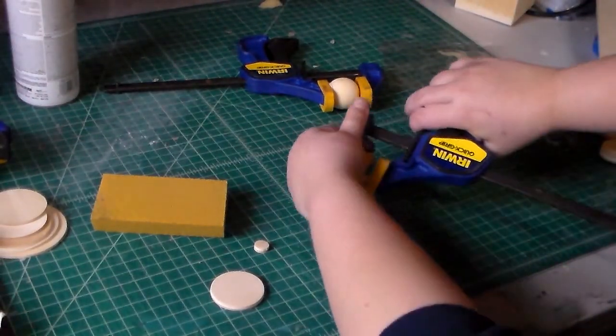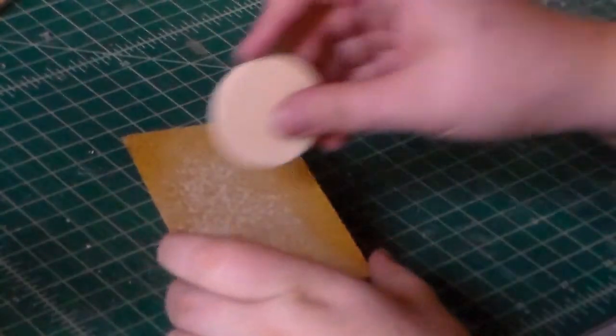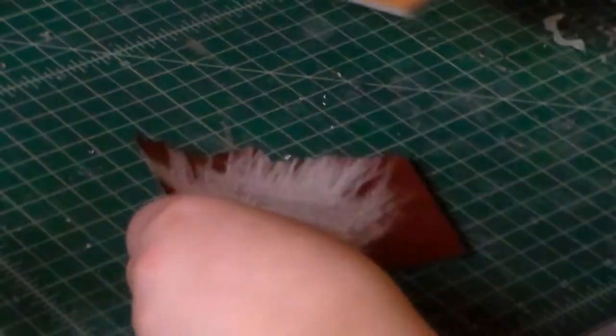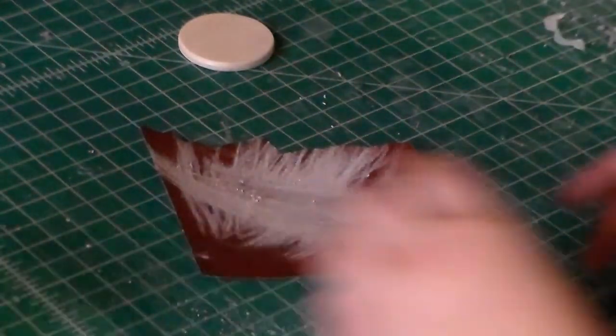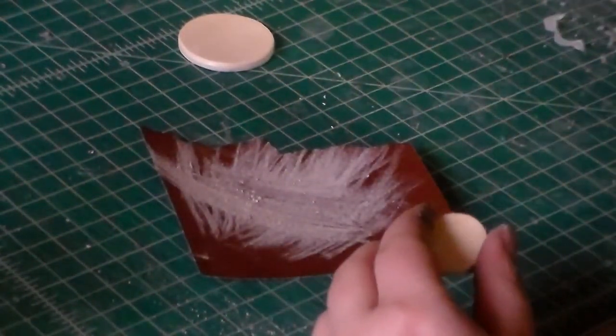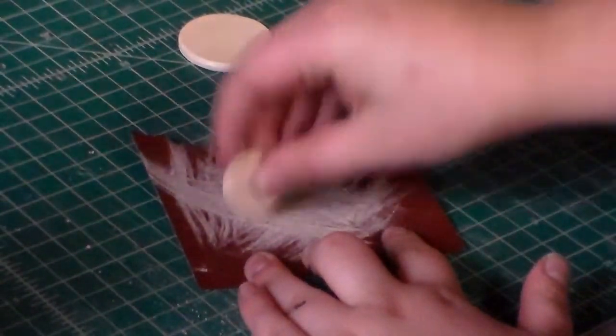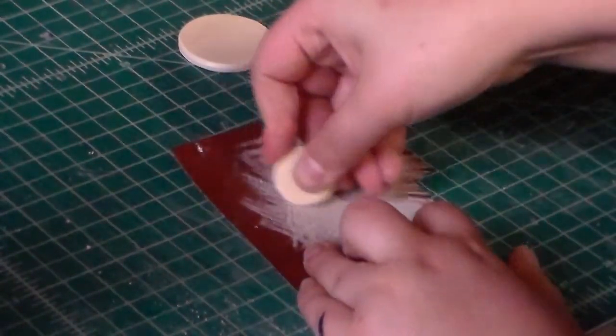After the glue is cured, take the wooden discs out of the clamps and sand down the edges of the discs so they are nice and smooth. Start with the coarser grit, then move to a fine grit to make the wood soft to the touch. I also beveled the edges of the discs by dragging it across the sandpaper at an angle so the edges were rounded.